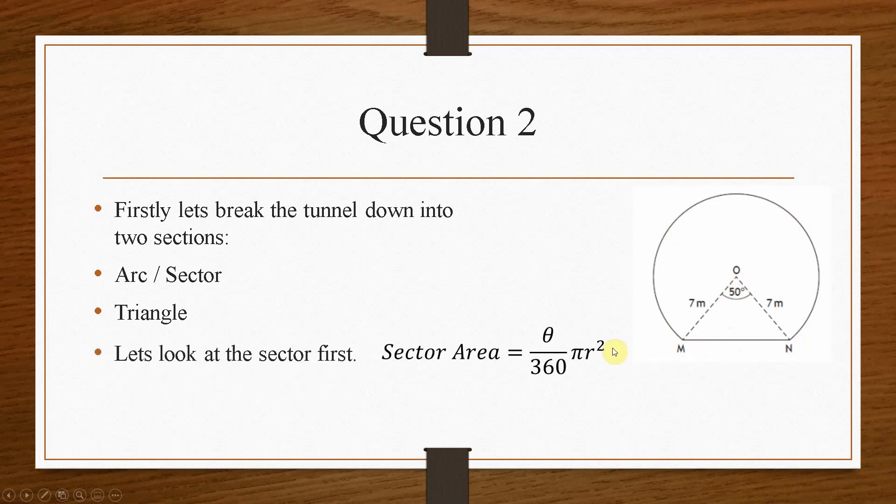Now, we'll take a look at the sector first. So again, we'll write down the equation that we're going to use, and then we write down the information that we're given. However, the angle this time is going to be the major sector, because this bit here is the minor, so our theta must be 360 degrees minus 50 degrees, because that is the size of the sector from here all the way round to here. So we have to do 360 minus 50, which gives you 310 degrees.